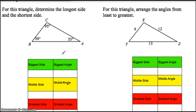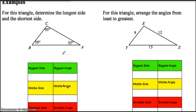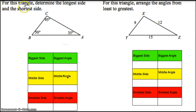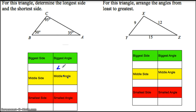Let's take a look at some questions and how we can answer them. There's a little chart that becomes helpful. For this first triangle on the left, we want to determine the longest side and the shortest side. What I like to do is organize my information by putting in the biggest angle, the middle angle, and the smallest angle. The biggest angle is angle C, which is 95 degrees. The middle angle is 50 degrees, and that's angle B.